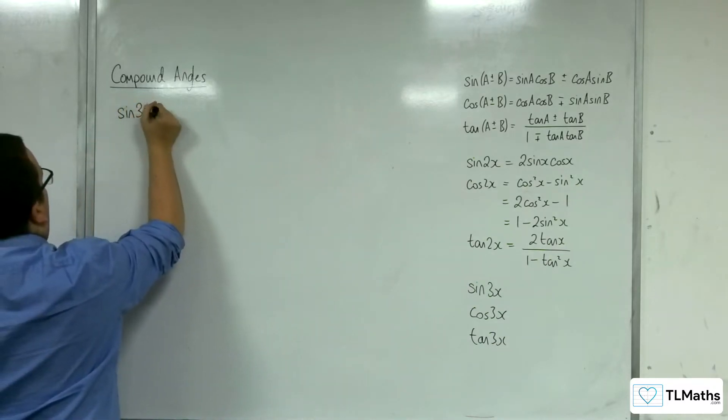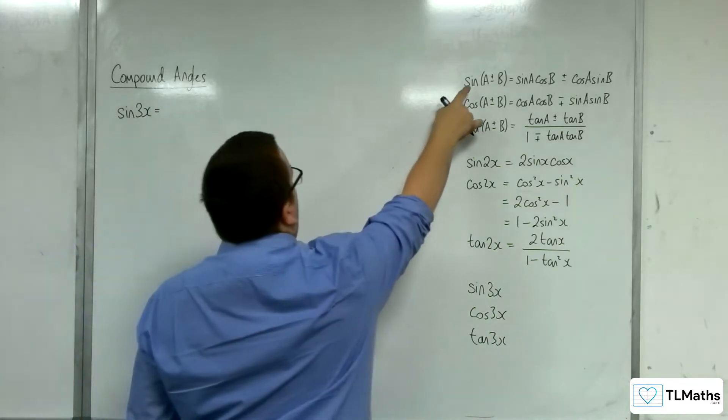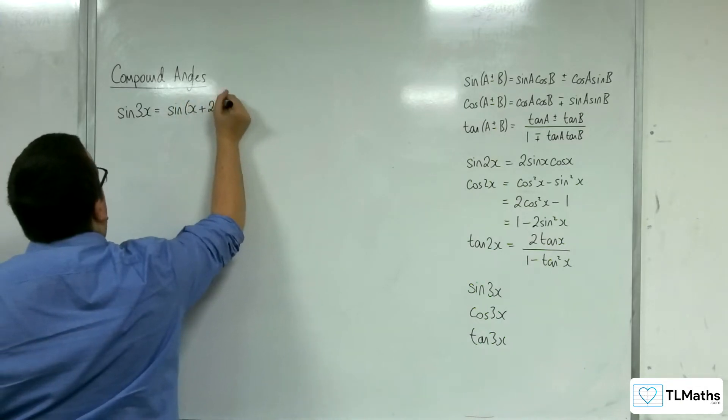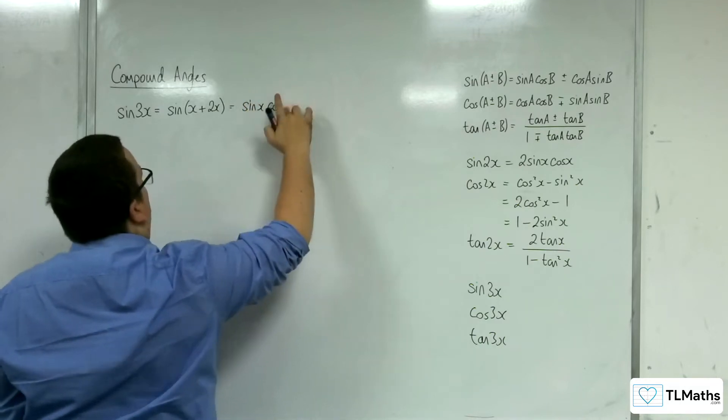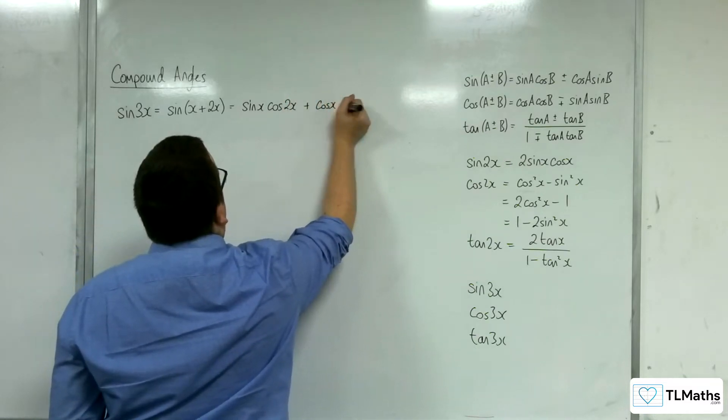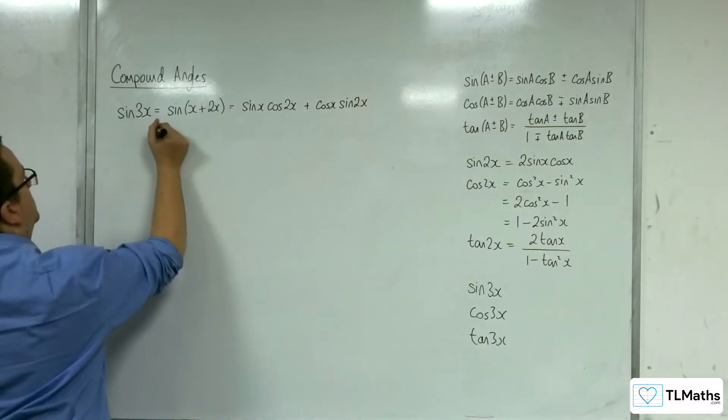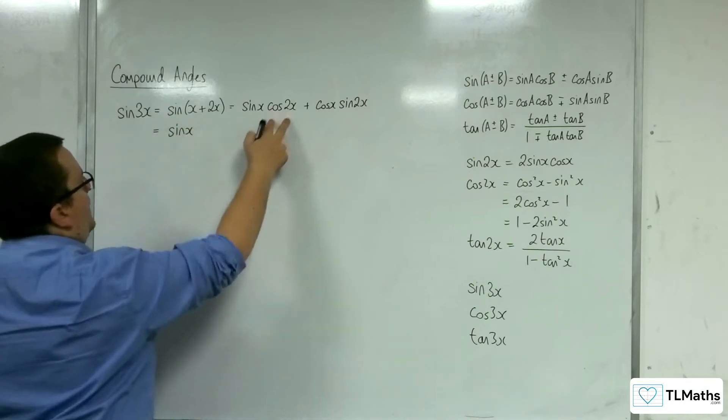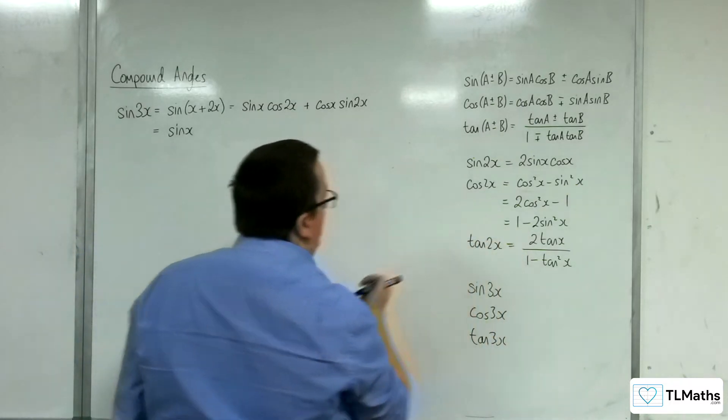So with sine of 3x, what you can do is you can use the compound angle formula up here to split this into sine of x plus 2x. So this is sine of x, cosine 2x. Then we've got plus cosine x sine of 2x. Now, we've got the sine x. We've then got cosine 2x.